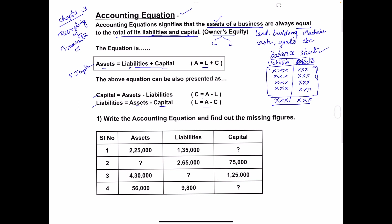Based on this equation, we will solve a problem. The question is: write the accounting equation and find out the missing figure. Such questions may be asked in exams. The accounting equations are: A = L + C, C = A − L, and L = A − C.